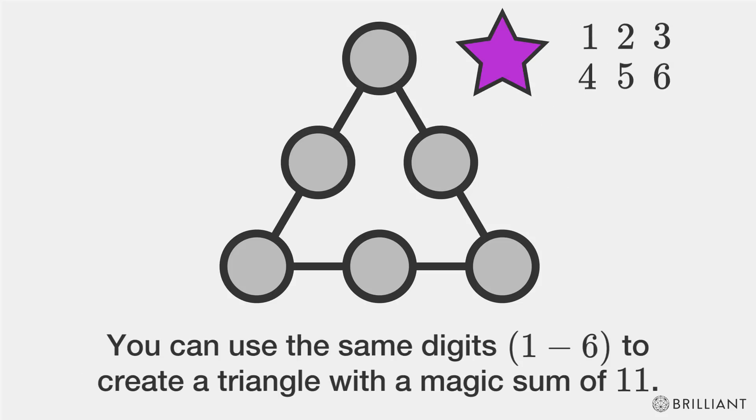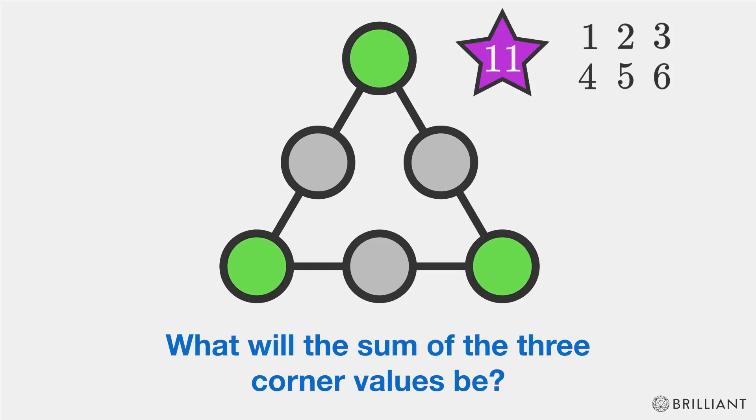You can use the same digits, 1 through 6, to create a triangle with a magic sum of 11. What will the sum of the three corner values be? You can pause and take a second to think about it if you want.